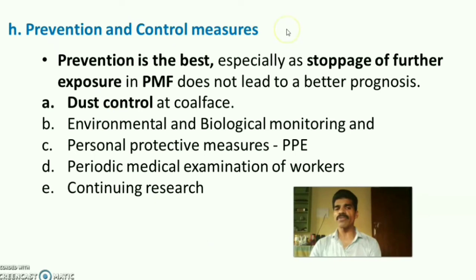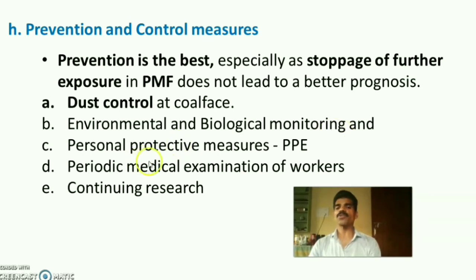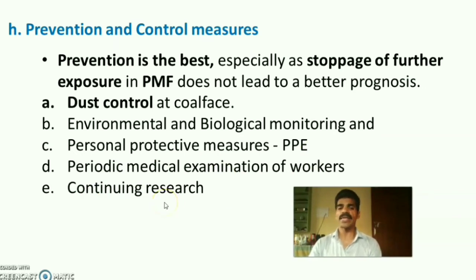Prevention is the best approach for anthracosis as there is no specific treatment. Stopping further exposure may not reverse progressive massive fibrosis. Measures include dust control at coal mines, environmental and biological monitoring with X-ray and clinical examination, use of personal protective equipment such as masks and respirators, periodical medical examination of workers, and continuing research on anthracosis to find better clinical solutions.